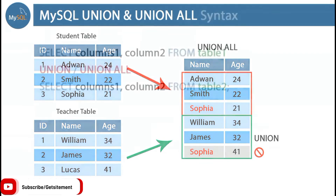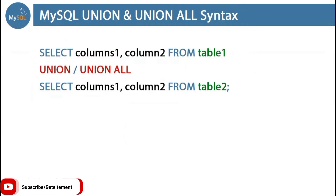Let's see their syntax. First we need to type the SELECT command, then provide the column names we want to extract from our tables. Then we need to type FROM and provide the table name — in our case, table 1. Then we need to use the operator UNION or UNION ALL. Then once again we type the command for our second table: SELECT column names FROM table 2. So UNION ALL is going to return a combined result from both tables.